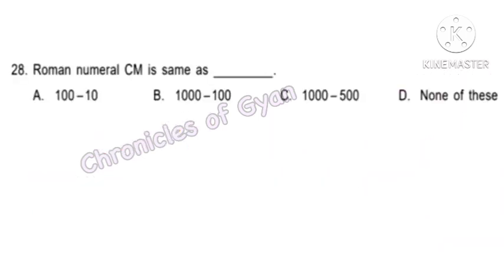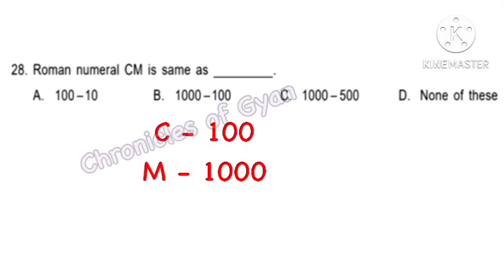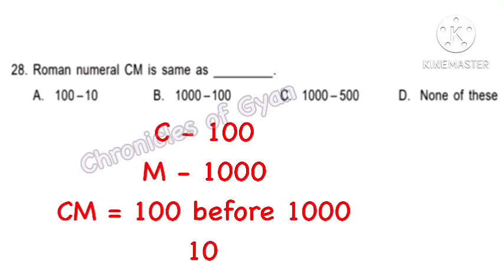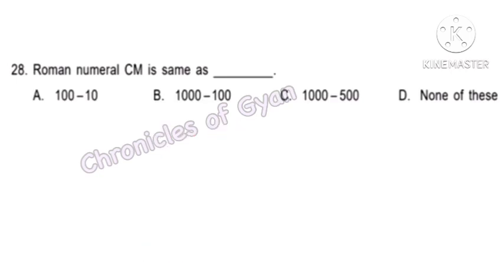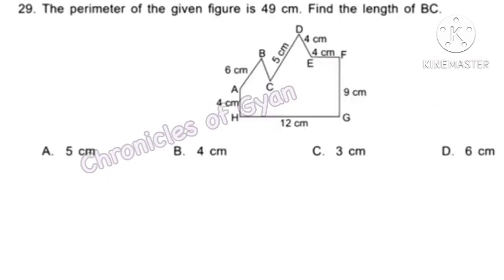Question 28. Roman numeral CM is the same as what? Roman letter C stands for 100 and M stands for 1,000. The value of CM is 900. Hence option B — 1,000 minus 100 — is the same as CM.